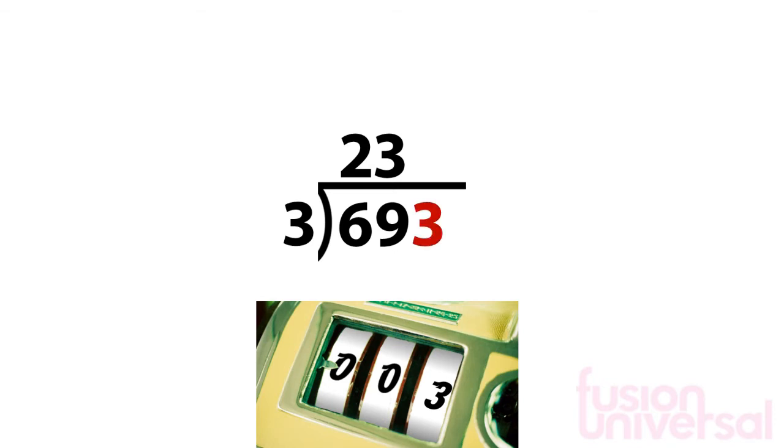Finally, we look at the unit's place value. We divide this 3 by 3. 3 goes into 3 once. We put 1 directly above the 3.